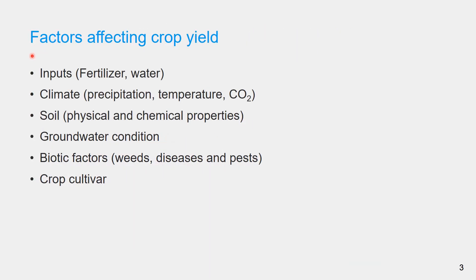Many factors affect crop yield that includes inputs, the amount and timing of fertilizer and water, climatic parameters such as precipitation, temperature and carbon dioxide concentration in the atmosphere, physical and chemical properties of soil, groundwater condition, the quality of the water as well as whether the groundwater is shallow or not.